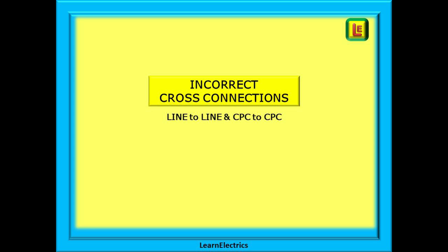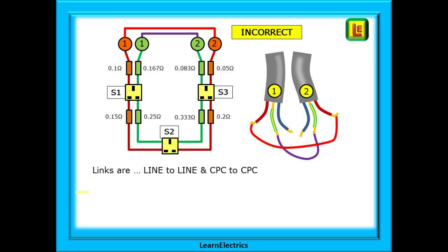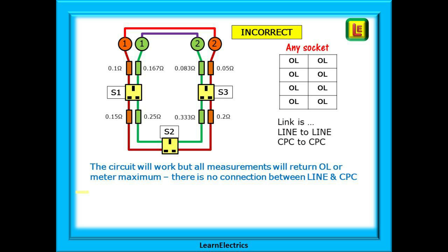It's easy to make the wrong cross connections too, so let's look at these. If the two lines are connected together, and the two CPCs connected together as shown, how will this present itself when testing? How will we know that it is incorrectly cross connected? When we try to make a low ohms test between the line and earth terminals at any socket, we will get an open circuit reading. OL on my meter, or the meter maximum on others. This is because there is no path for current to flow between line and earth. There is no connection.